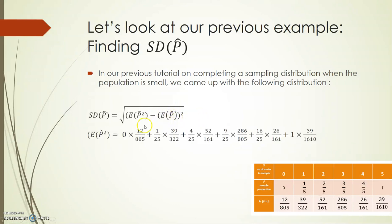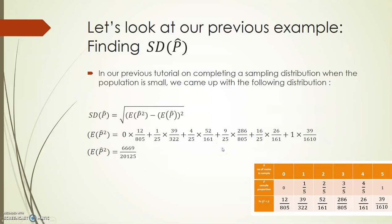The first thing we need to do is to find the expected value of p-hat squared. To do this, we multiply each value of p-hat squared by its probability. So I need to square each value of p-hat — for example, 2/5 squared gives 4/25, and then multiply it by 52/161. 0 squared is 0, 1/5 squared is 1/25, 2/5 squared is 4/25, 3/5 squared is 9/25, 4/5 squared is 16/25, and 1 squared is 1. When I add all those values together, I get the expected value of p-hat squared is 6,669/20,125.